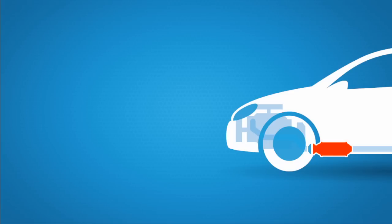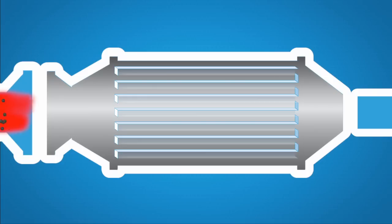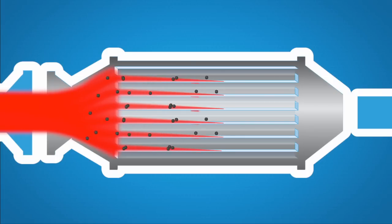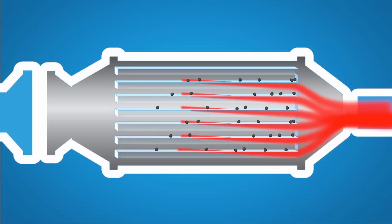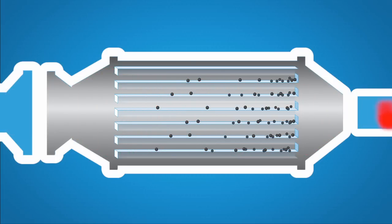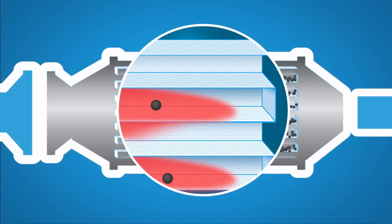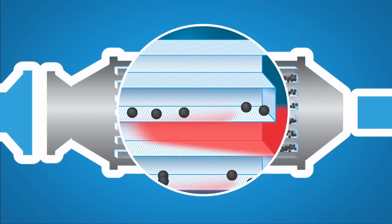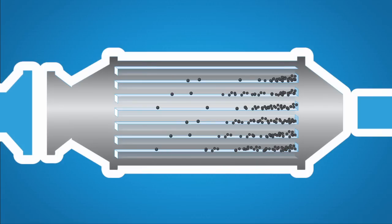How it works: A diesel particulate filter is fitted as closely as possible to the engine in the exhaust system. When the exhaust gases flow through the diesel particulate filter, the soot particles are trapped, while the other elements of the exhaust gas are emitted through the porous walls of the filter.